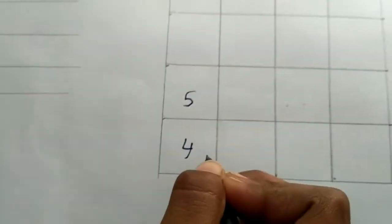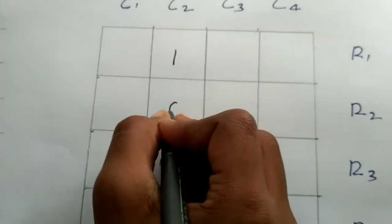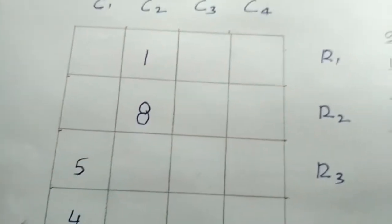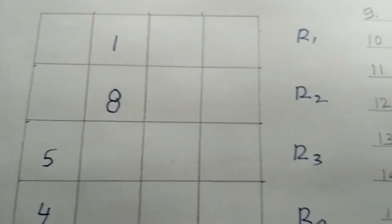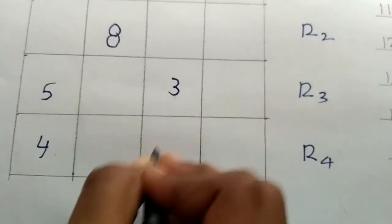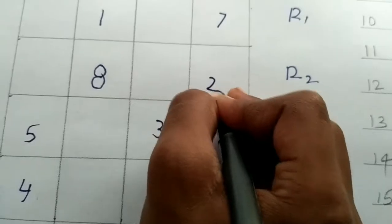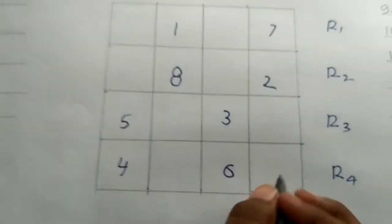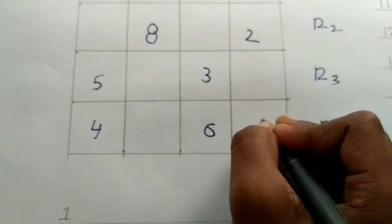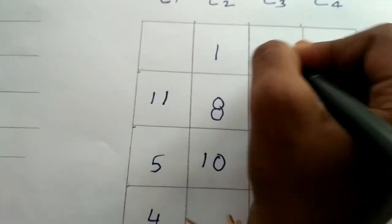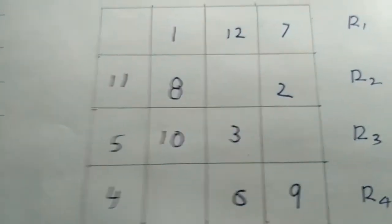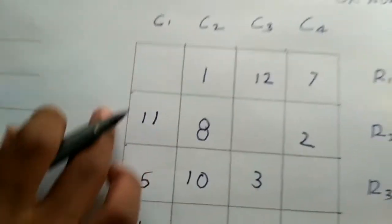We should write here 5 and 4. We should add: 5 plus 4 is equal to 9. 9 times 2 is 18 — write 1 here and 8 here. 9 times 4 is 36 — write 3 here and 6 here. 9 times 8 is 72 — write 7 here and 2 here. Then we fill boxes 9, 10, 11, and 12.